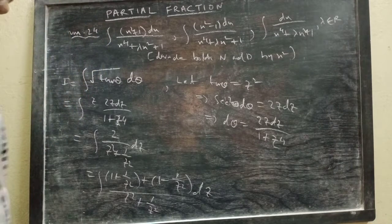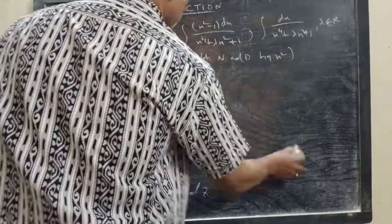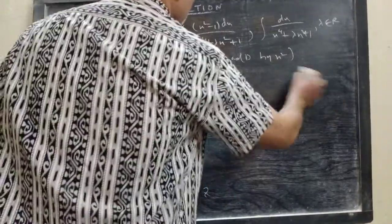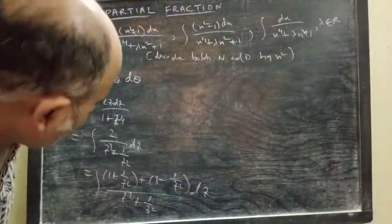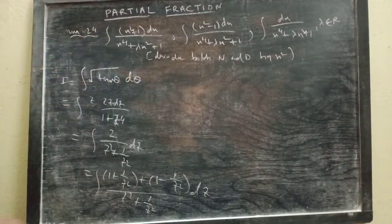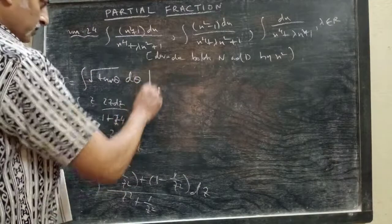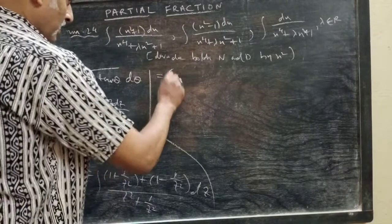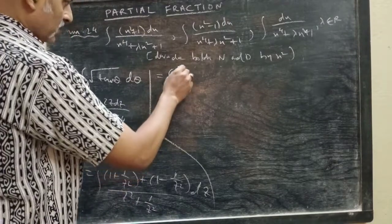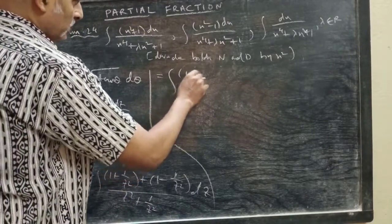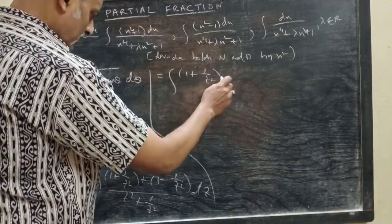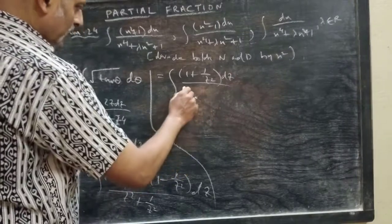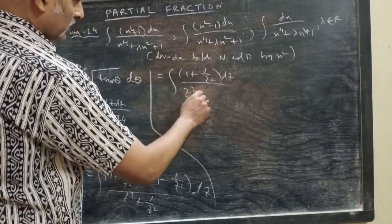Now we have to split it from here. We get integration of (1 + 1/z²) / (z² + 1/z²) dz plus integration of (1 − 1/z²) / (z² + 1/z²) dz.